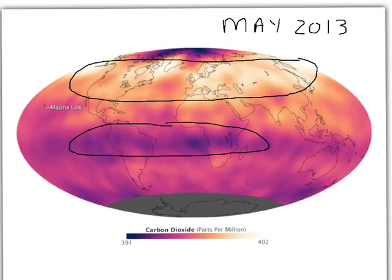If you were to come back a few months later these would have reversed a little bit. Now these variations are very small — 402 is the highest, 391 is the lowest. It's barely more than plus or minus one percent about the mean, because there's a lot of mixing around the planet.